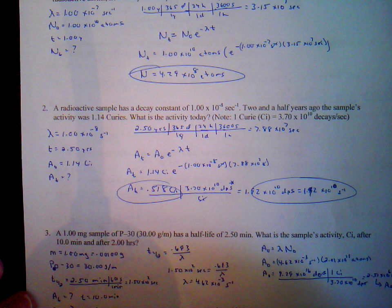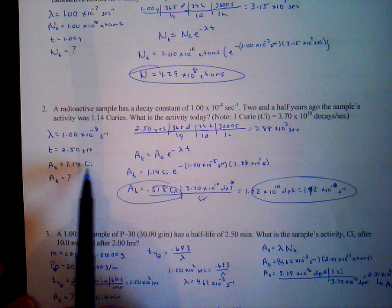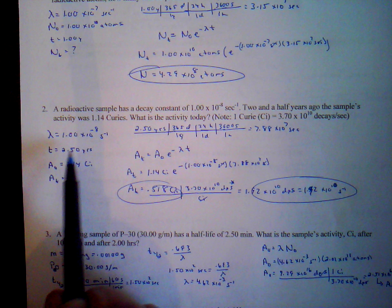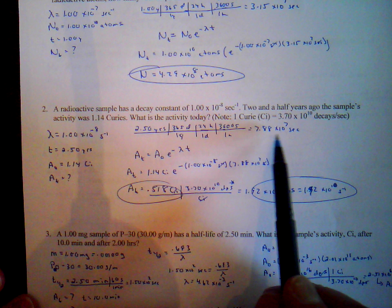Number 2: we're given the decay constant, the time, and the initial activity in curies. We want the activity after 2.5 years. Activity is the number of atoms per time. Converting 2.5 years to seconds gives 7.88 times 10 to the 7 seconds.